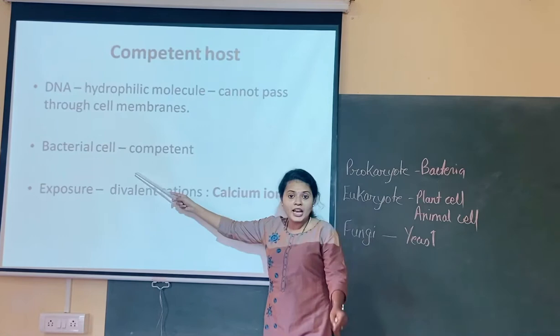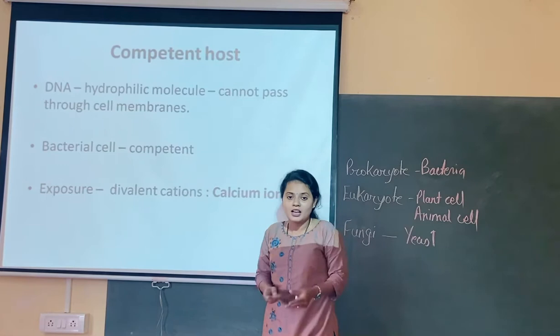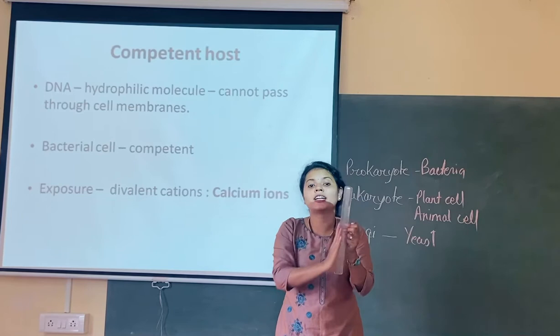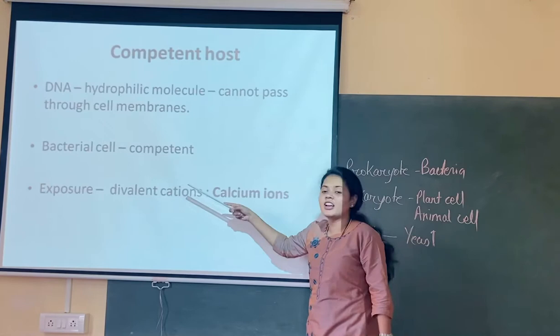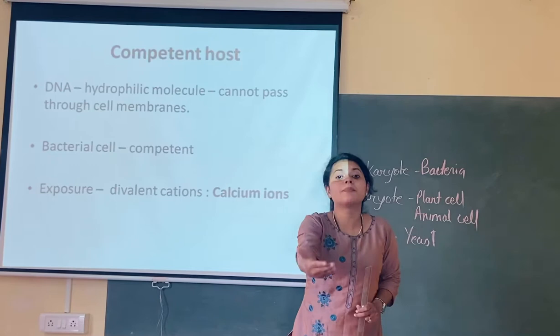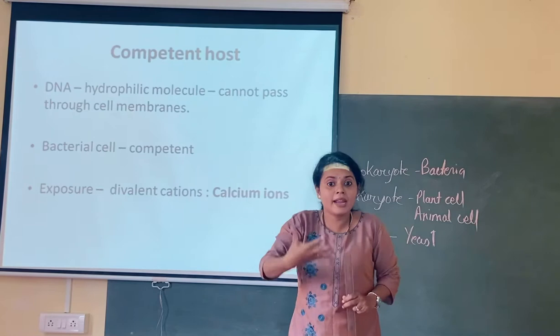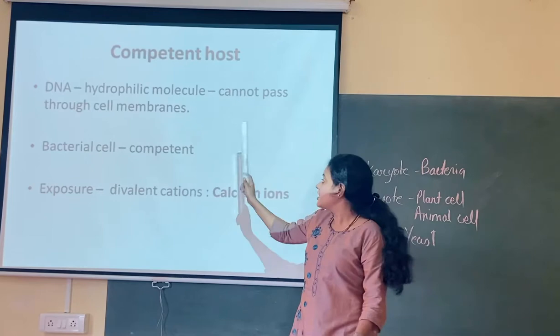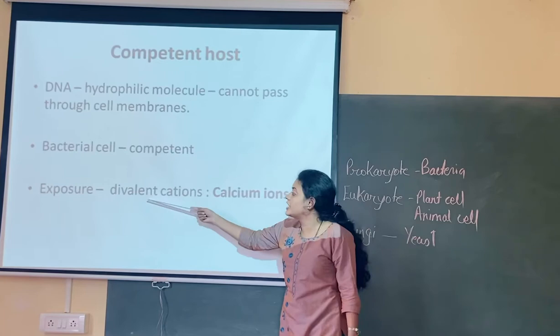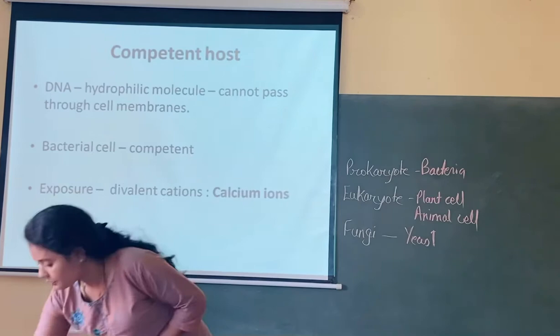We can make the host cell competent enough to transfer or accept the gene of interest — hence, competent host. We need to make the host cell competent. How? Very firstly, we need to expose this cell membrane to divalent cations — cations having valency 2. Divalent cations, such as calcium ions with 2 positive charges, can change the permeability. They increase the permeability of the cell membrane, meaning they generate pores, and through those pores, the DNA can enter.